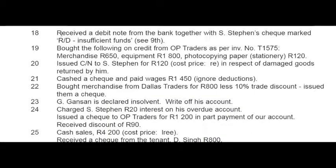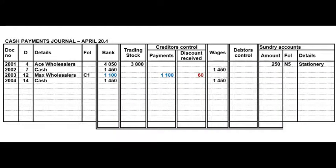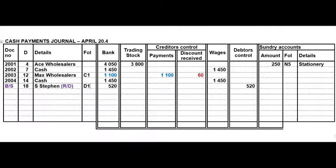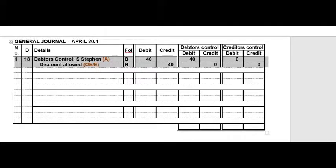On the 18th we received a debit note from the bank together with S. Steven's cheque marked RD — insufficient funds — referring back to the 9th. We have to cancel the 520 rand in the CPJ and the 40 rand discount in the General Journal. The document is the bank statement; you must say RD and write the debtor's number. The first General Journal transaction cancels the discount: debit A. Steven's account, credit discount allowed, narration: 'cancel discount on RD cheque.'